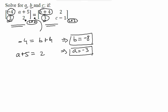Let us move on to our next element. Next element is 2 and the corresponding element is c minus 1. So this will give the value of c as 3. So we have all the three values a is equal to minus 3, b is equal to minus 8 and c is equal to 3 just by comparing the corresponding elements.